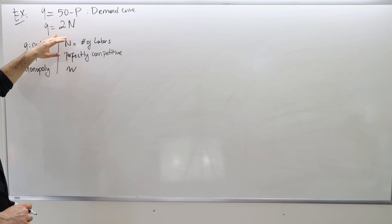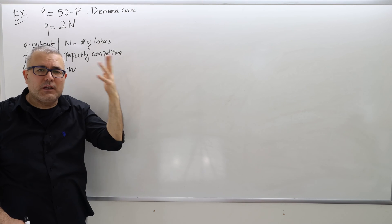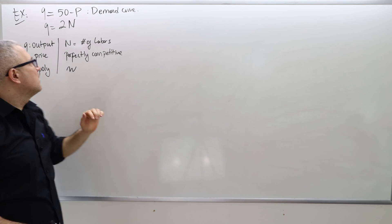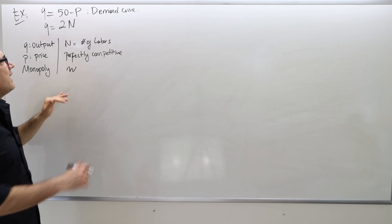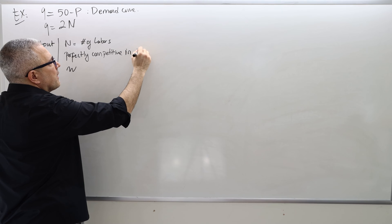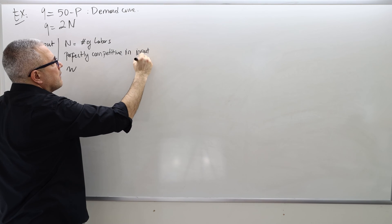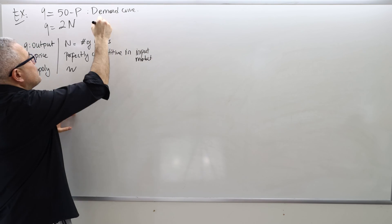In the input market, there are labors, and N is the number of labors, and Q equals 2N is the y equals f of x. So it's the production function, and then the firm is perfectly competitive in the input market. So this is basically case two.